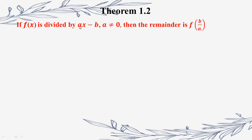Therefore, b by a. Now we have b here — this is the coefficient of a. If we have b here, we will have minus b. And x minus b is the factor. This is the sign; therefore b by a.